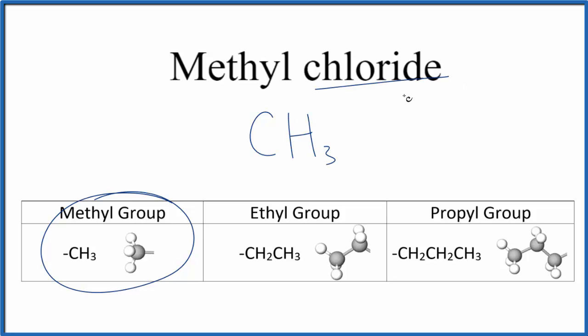And then we have chloride. It's just Cl. That makes the formula for methyl chloride CH3Cl.